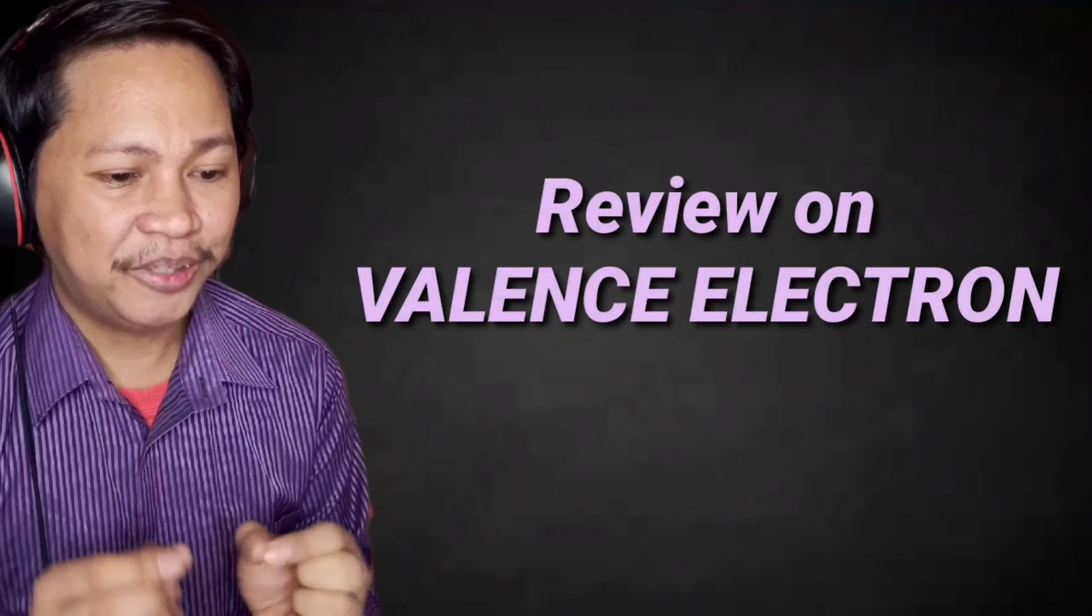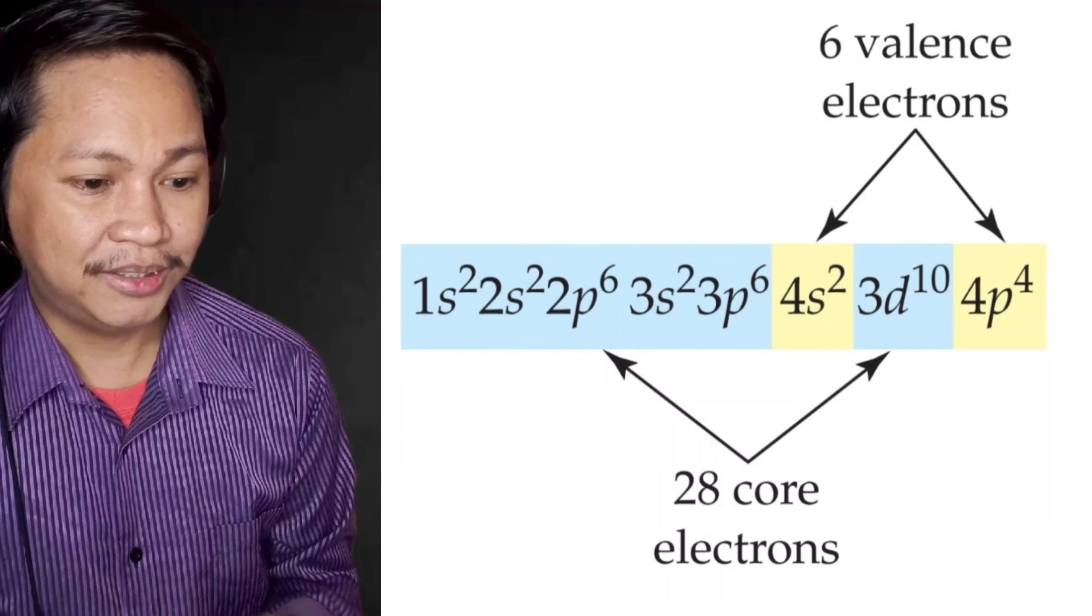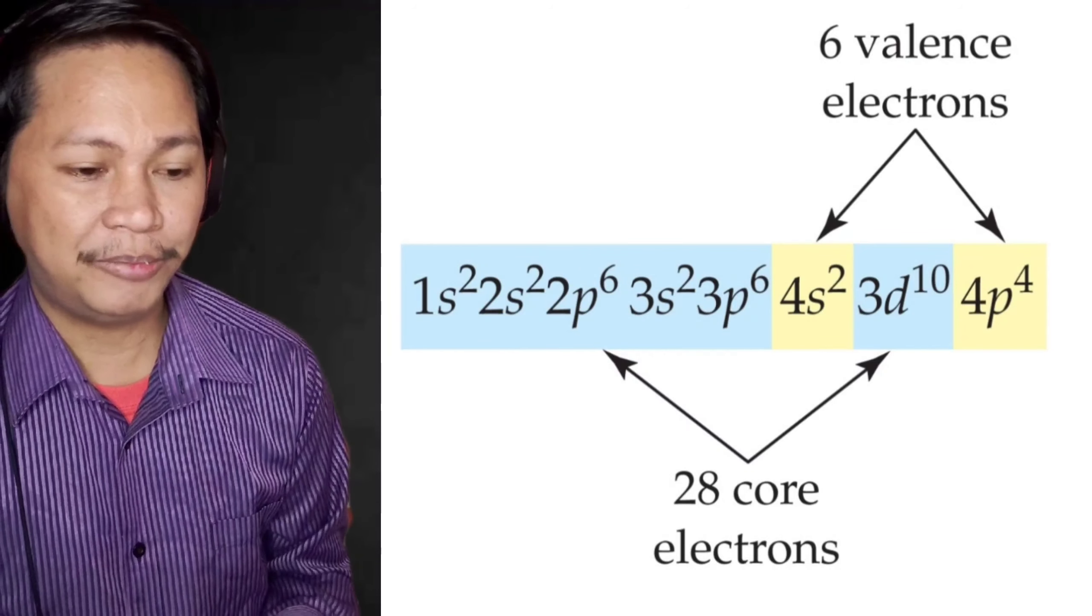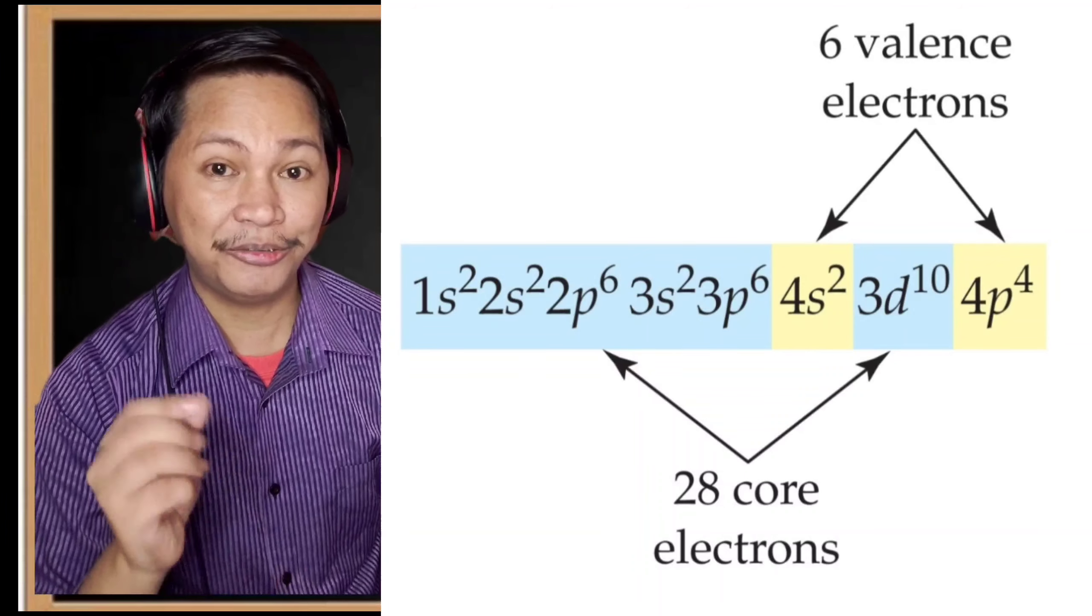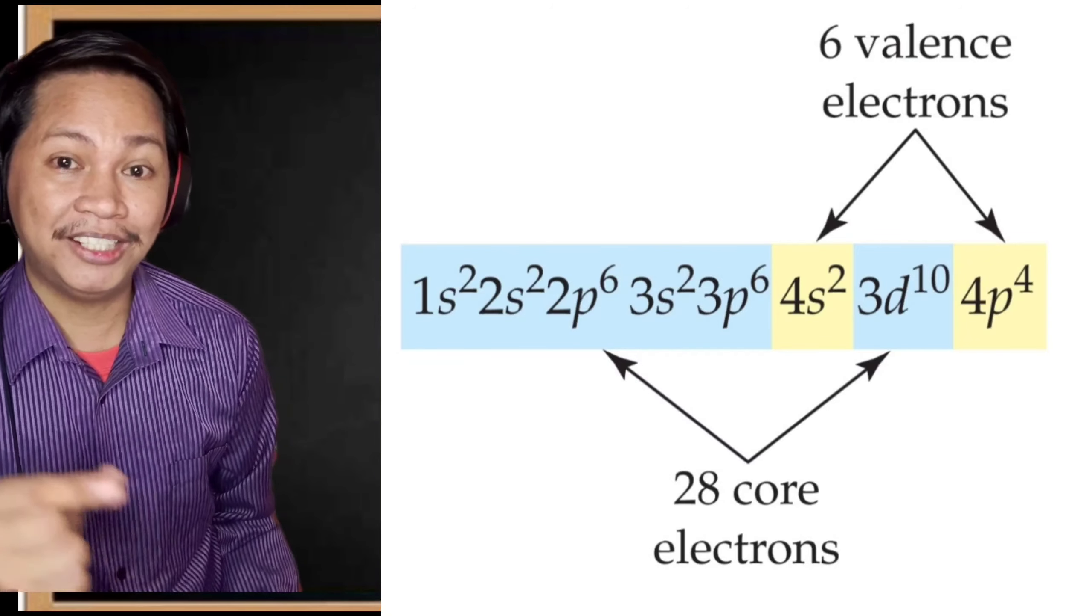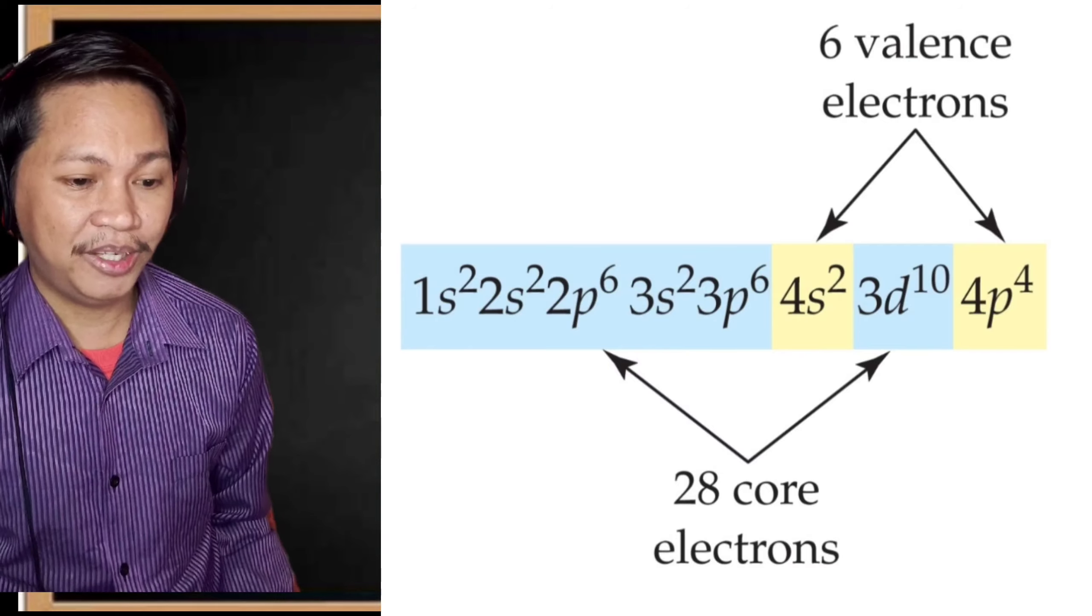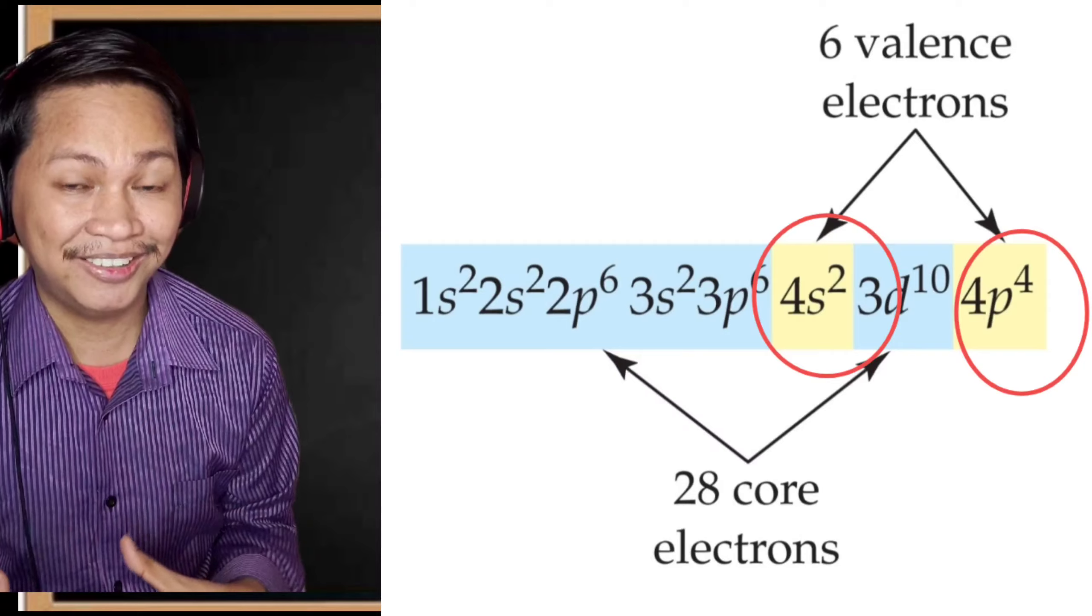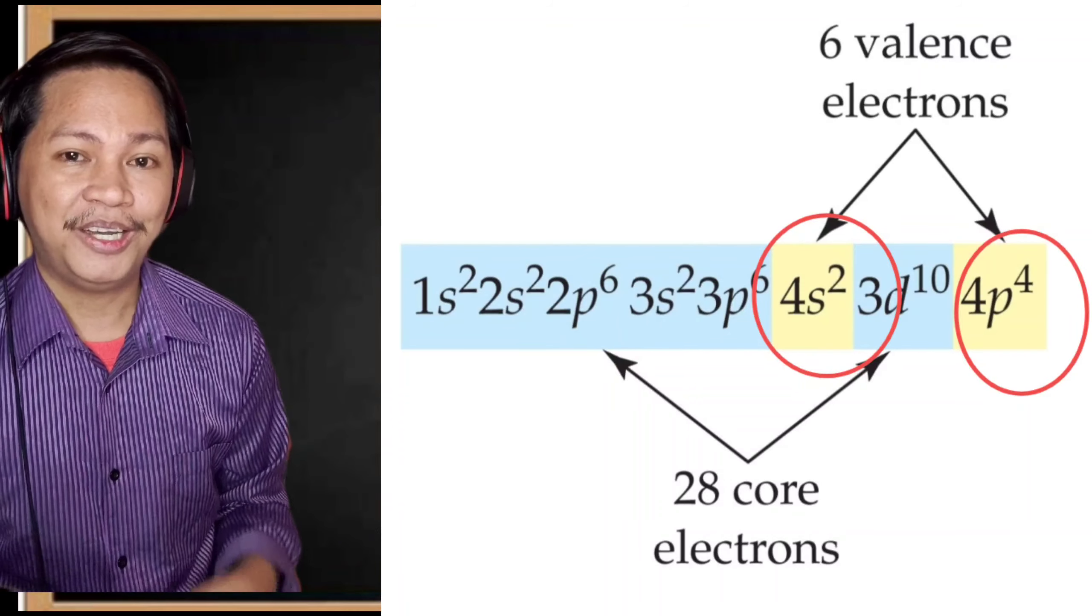In the next example, look at the number we have: 1s2 2s2 2p6 3s2 3p6 4s2 3d10 4p4. Look at the number class. The highest number there that you can find in that series is 4. Therefore, we will look at the valence electrons in the highest shell or the outermost shell. We just have to add the exponents. So we have 2 plus 4, therefore the valence electron is 6.